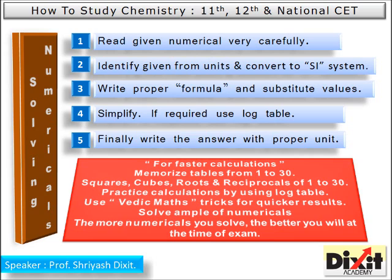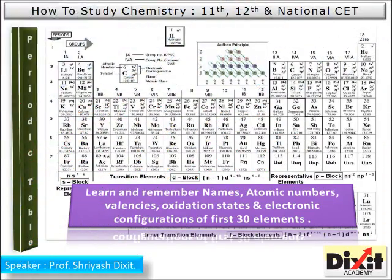Step 5: finally, write your answer along with the proper unit. For faster calculations, memorize tables from 1 to 30, squares, cubes, square roots, and reciprocals of numbers 1 to 30. Practice calculations using log tables. If you take too long to solve a numerical using a log table, you will have less time for remaining questions. Use Vedic maths tricks for quicker results. Solve and simplify ample numericals — the more you practice, the better you will be at exam time.